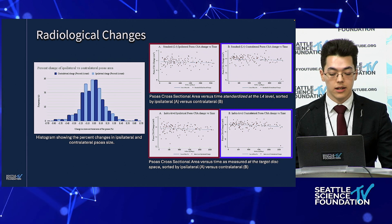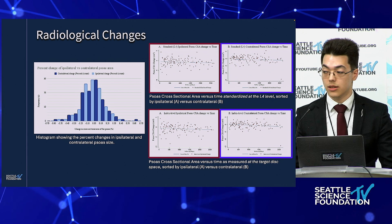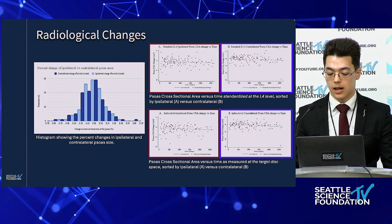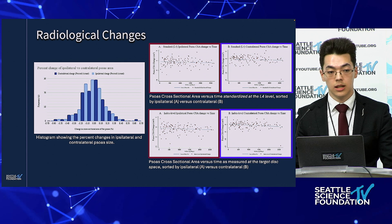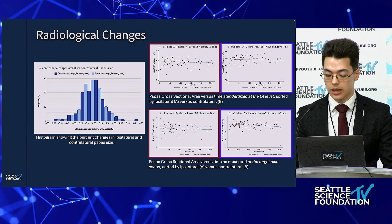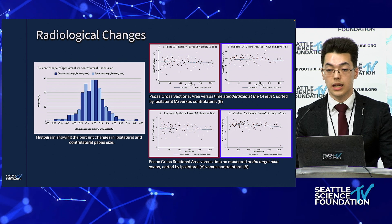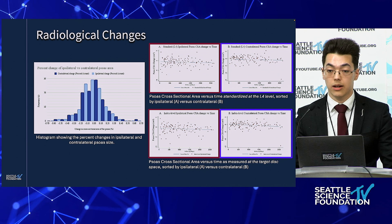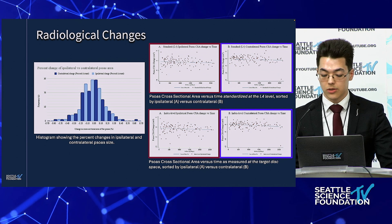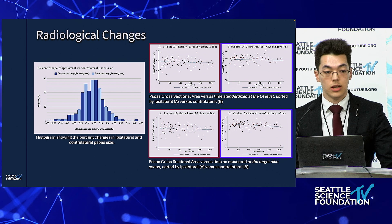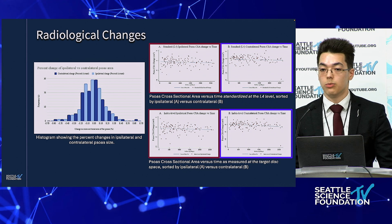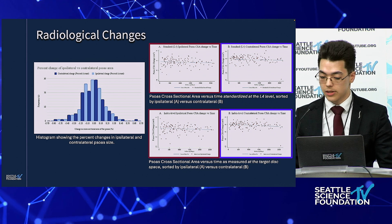The question then becomes: how do you predict it? We found that the only significant risk factor, at least in our cohort, was two-level fusions. Surprisingly, surgeon laterality, approach location, length of stay, and operative time didn't have any impact on whether the patient gained or lost. That kind of suggests to me that patient lifestyle factors might play a bigger role than the actual operation itself.